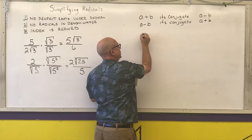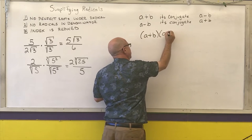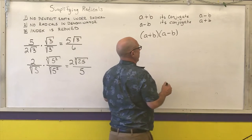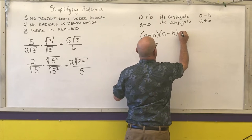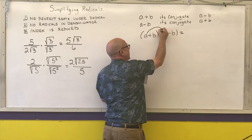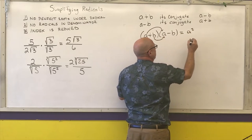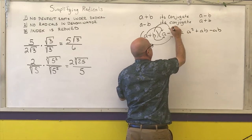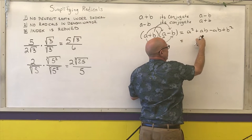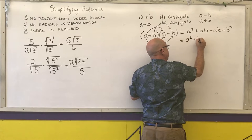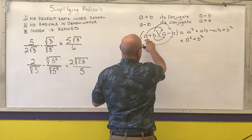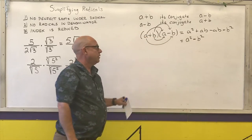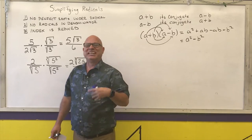Multiplying (a + b) times (a − b): distributing gives a², then +ab, then −ab, then −b². The ab terms cancel, leaving a² − b². So I end up with two perfect squares. If I have square roots for a or b, squaring them eliminates the radicals in the denominator.